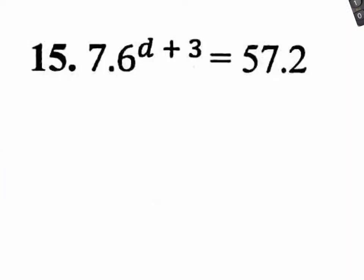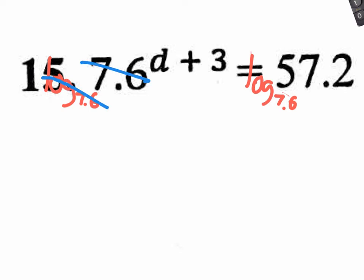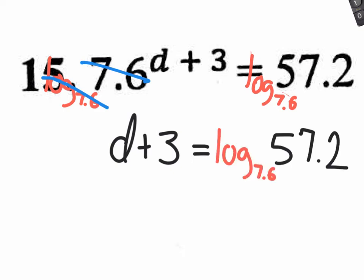On some of these you will not have a choice — you have to use the calculator. So what's my first step here? I want to solve for d. D is an exponent; I don't want it to be an exponent. What am I going to have to apply to both sides? Log base 7.6. So if I apply log base 7.6, it'll cancel out with that 7.6, and I'll have a new left side: d plus 3 equals, and on the right side it does not cancel. I need to rewrite this as log base 7.6 of 57.2. It's ugly, but you don't have to worry about it — the calculator does it for you.